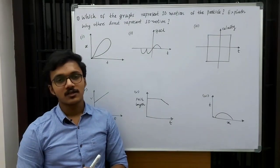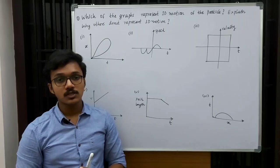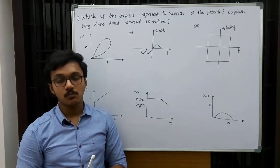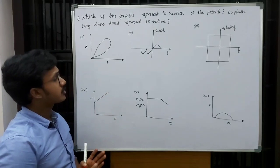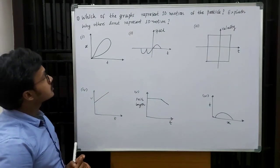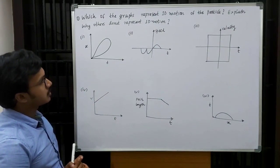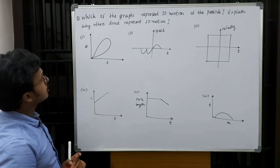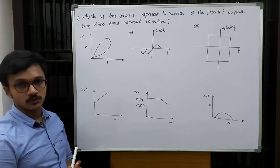Hi friends, today we are going to discuss some numericals on the chapter motion in a straight line. So let us see the first question: which of the graphs represent one dimension motion of the particle, and explain why others do not represent one dimension motion.